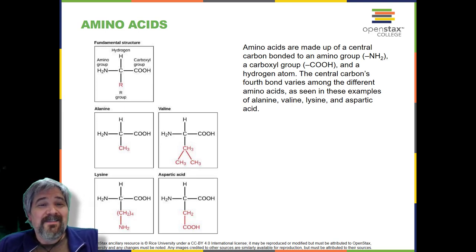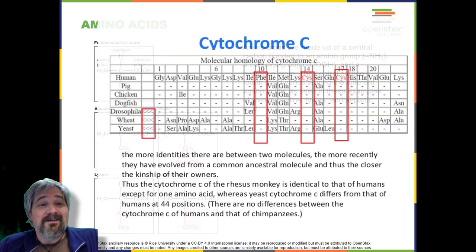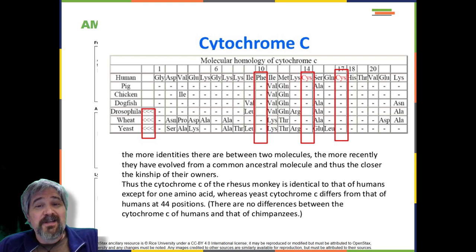Cytochrome C is an important component of the molecular machinery that harvests energy from glucose. Because this protein's role in producing cellular energy is crucial, it has changed very little over millions of years. Protein sequencing has shown that there is a considerable amount of sequence similarity among cytochrome C molecules of different species. Evolutionary relationships can be assessed by measuring the similarities or differences among various species protein sequences. For example, scientists have determined that human cytochrome C contains 104 amino acids. For each cytochrome C molecule that has been sequenced to date from different organisms, 37 of these amino acids appear in the same position in each cytochrome C. This indicates that all of these organisms are descended from a common ancestor.